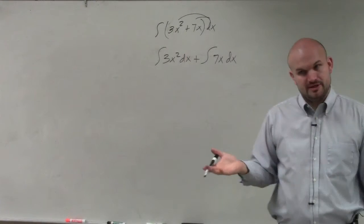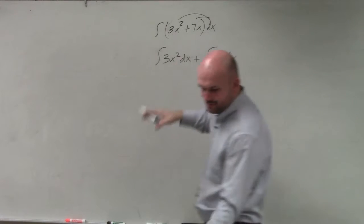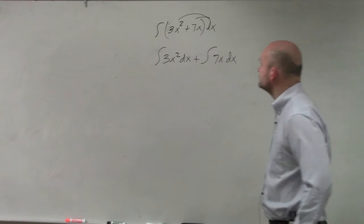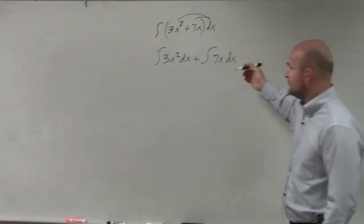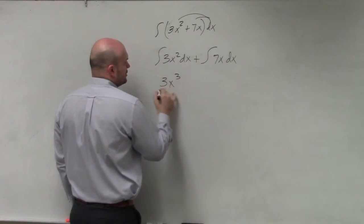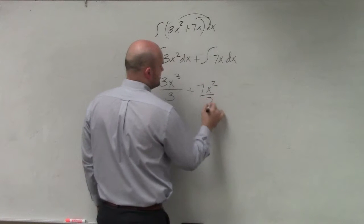So we can integrate them separately and then just combine them for our final answer. Over here, we're basically going to have 3x³/3 + 7x²/2.